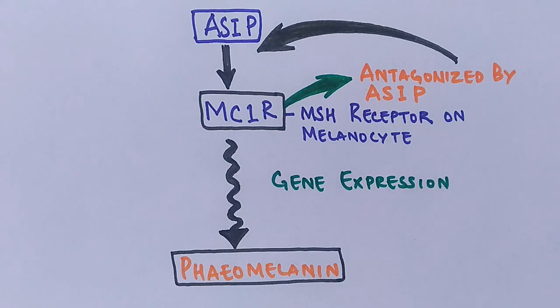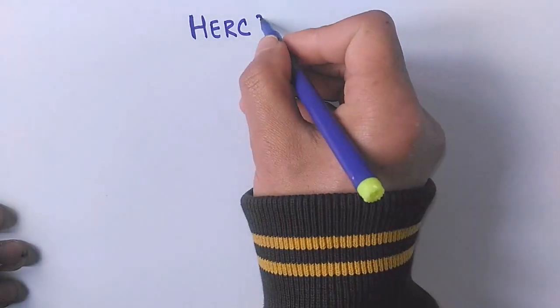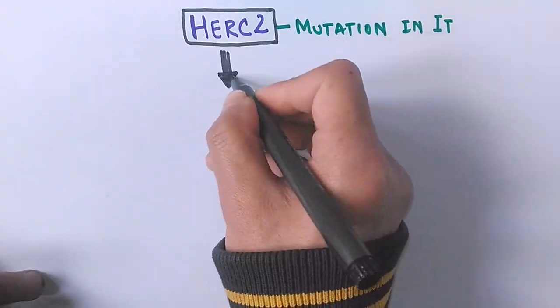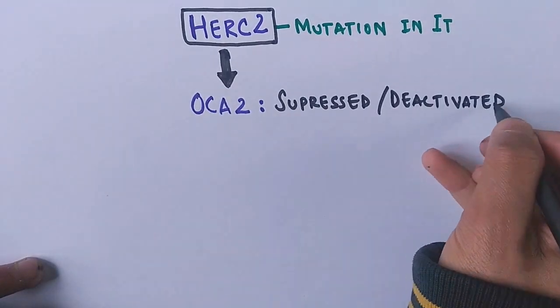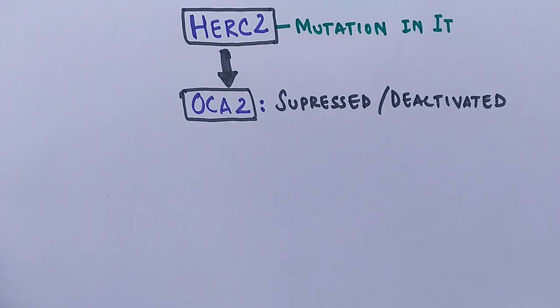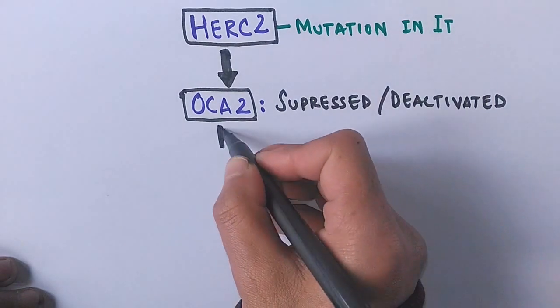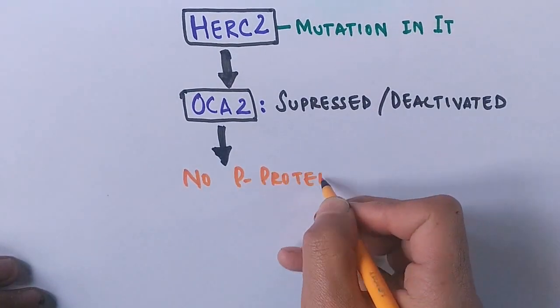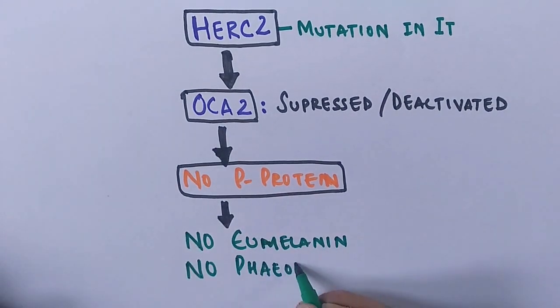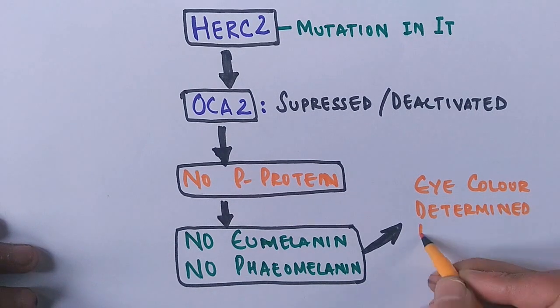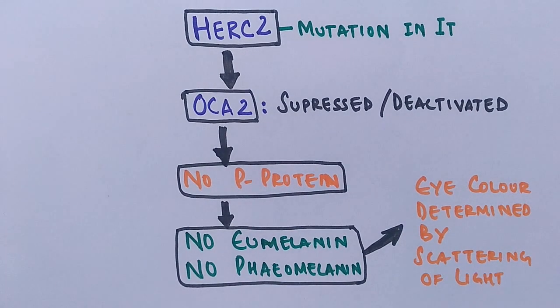Another gene involved in eye color is the HERC2 gene. This gene doesn't contribute to eye color directly, but its interaction with OCA2 can create various shades for the iris. A mutation in HERC2 can suppress or deactivate the OCA2 gene on chromosome 15, since both genes are adjacent and interact with each other. When OCA2 is shut down, no P protein is formed, meaning no eumelanin or pheomelanin is made, and eye color becomes wholly dependent upon light scattering in the stroma and the type of stroma present in the iris and iris epithelium. This HERC2 variant is prevalent in European populations, which is why blue eyes are abundant there.